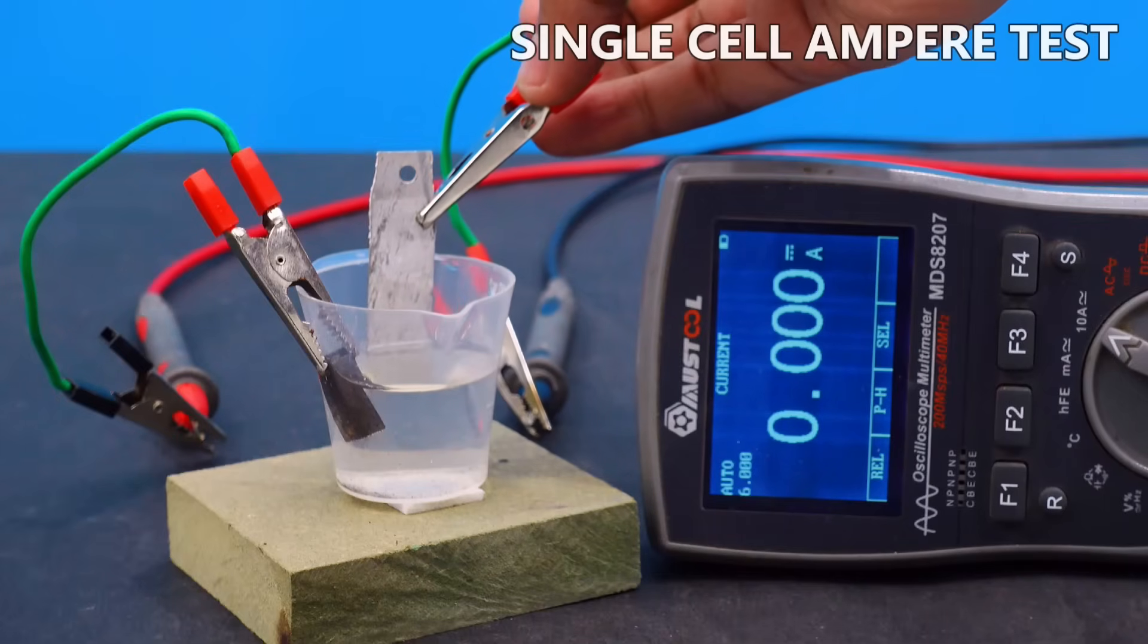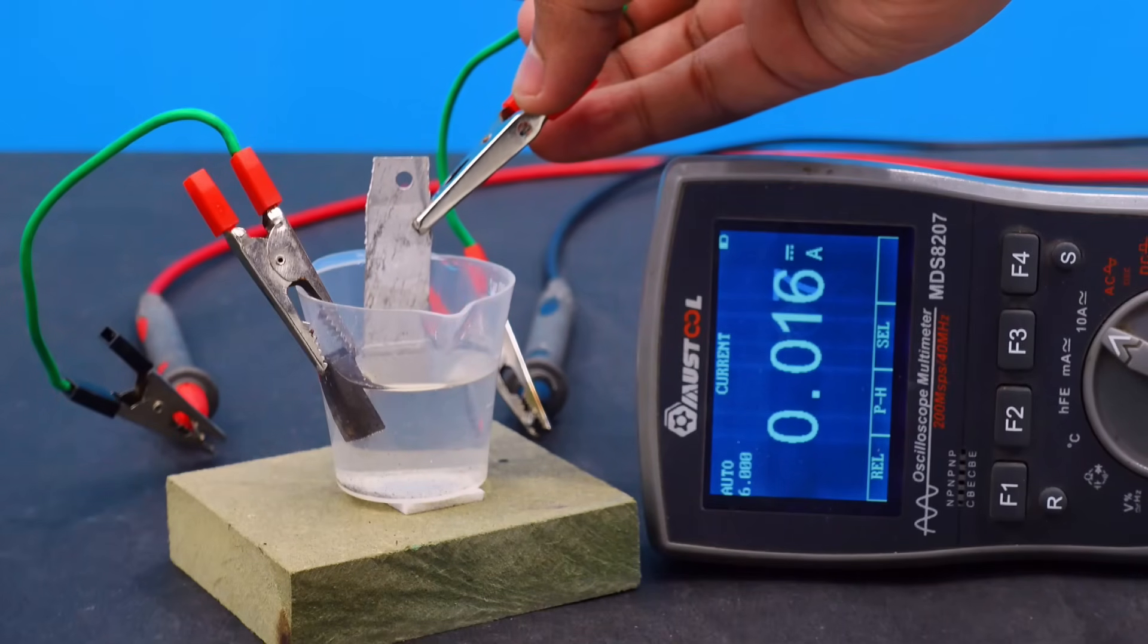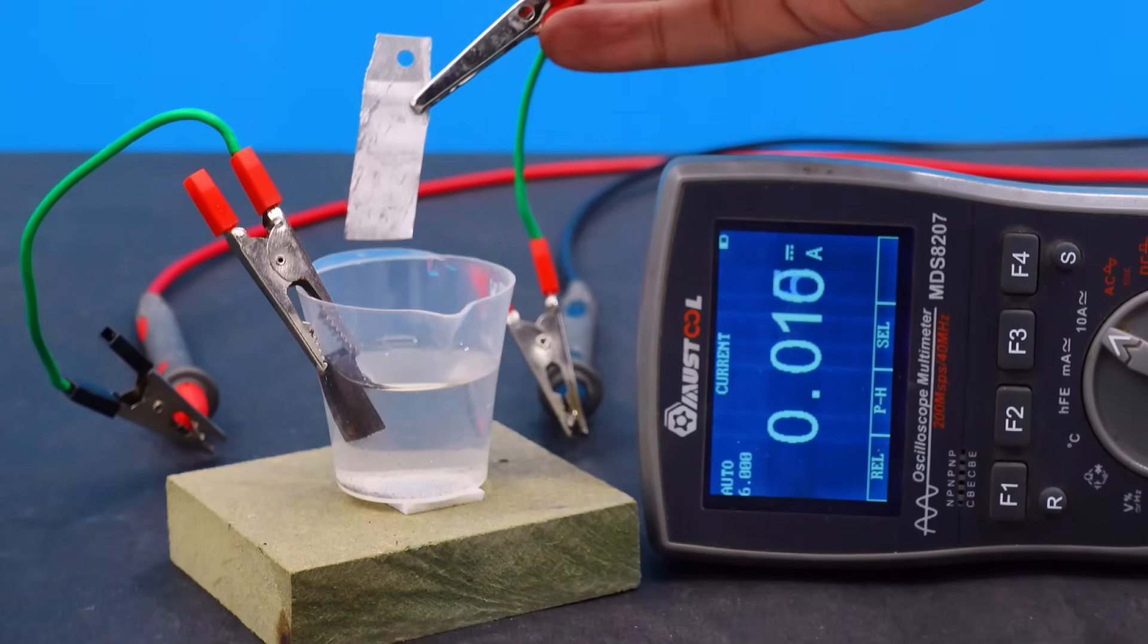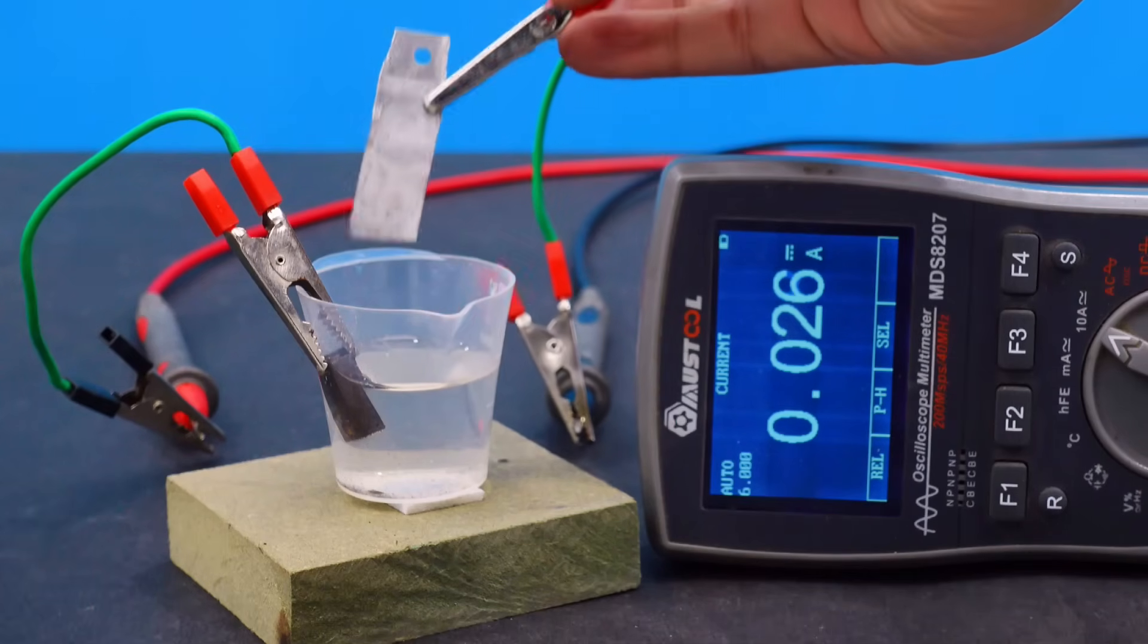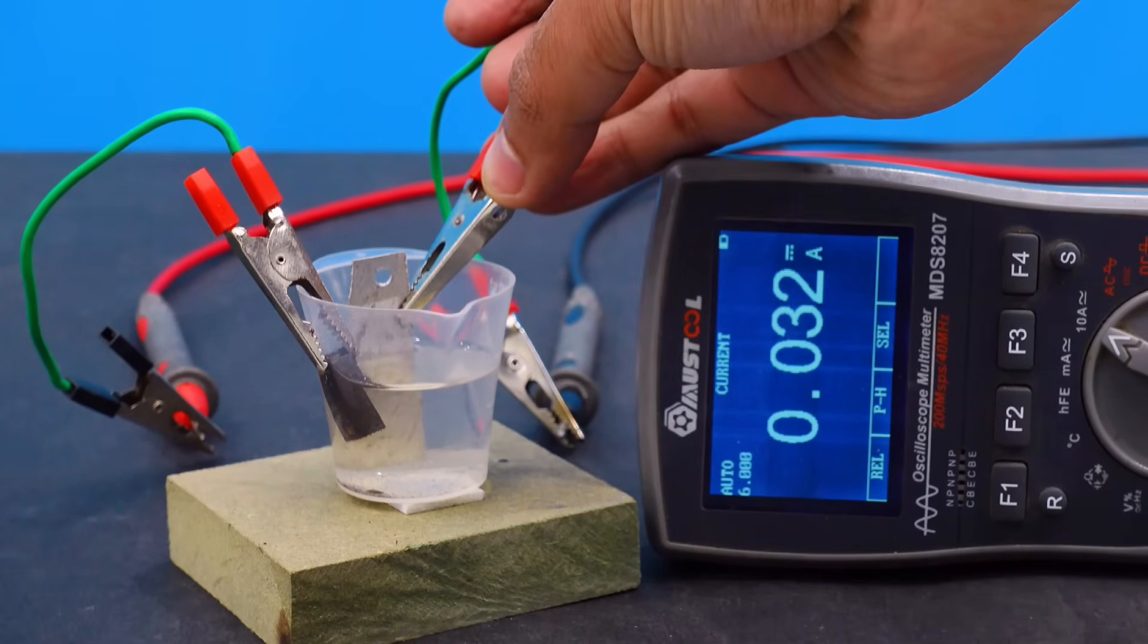Moving on to the current testing here you can see a small dip of aluminum plate gives 0.017 and a big dip gives 0.026 and then 0.032 amperes.